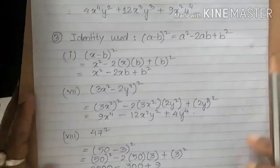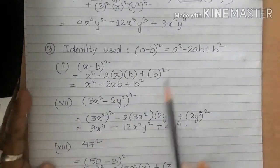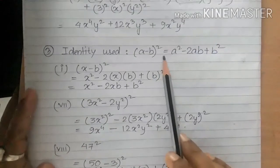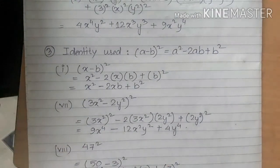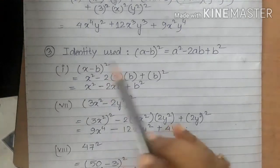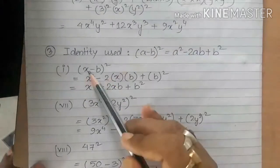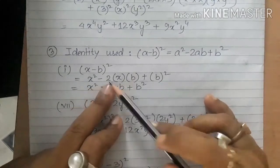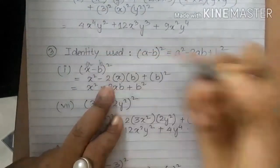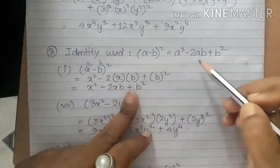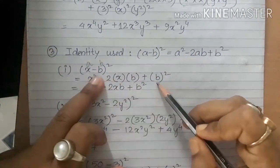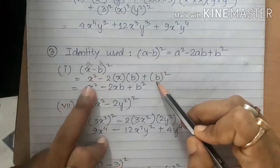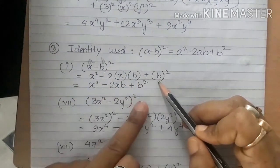In question number 3 we use the identity (a−b)² = a² − 2ab + b². For the first one, (x−b)²: in place of a we have x and in place of b we have b. Applying the formula: x² − 2xb + b².